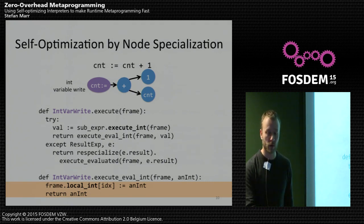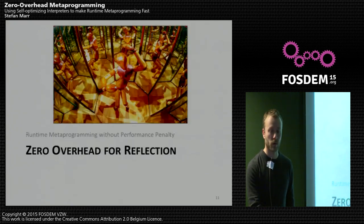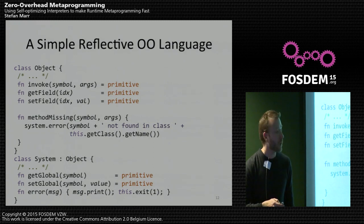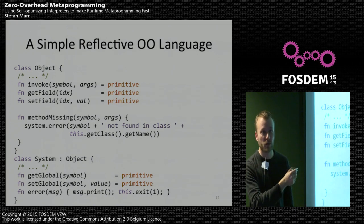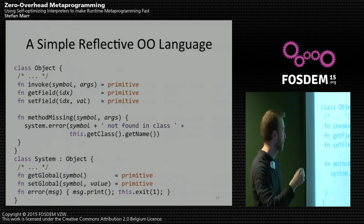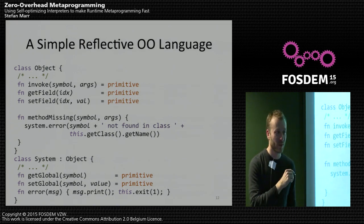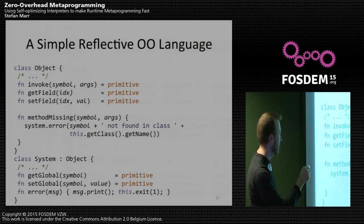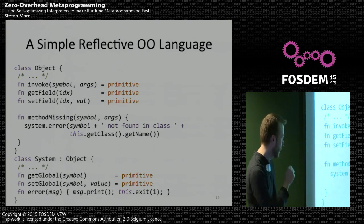Now I want to show how we use that to optimize reflection. Here's an overview of what the language looks like — it's still a Smalltalk with brace notation for non-Smalltalkers. You can see our perform, instance-var-at, instance-var-at-put, does-not-understand, get-global, and so on.